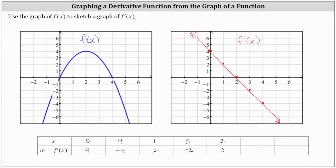One more connection I'd like to make here. Notice where f of x is increasing, f prime of x is positive or above the x-axis. And where f of x is decreasing, f prime of x is negative or below the x-axis. Notice how the sign of f prime of x changes from positive to negative at x equals two, which corresponds to a high point on the graph of f of x, resulting in a relative — or in this case an absolute — maximum. I hope you found this helpful.